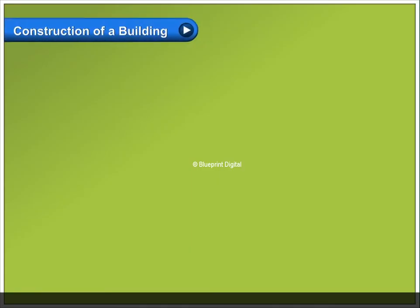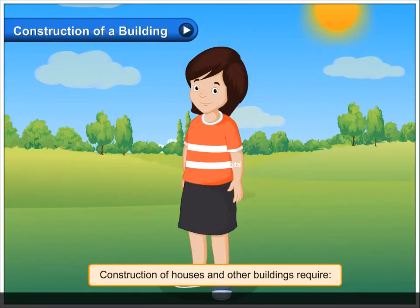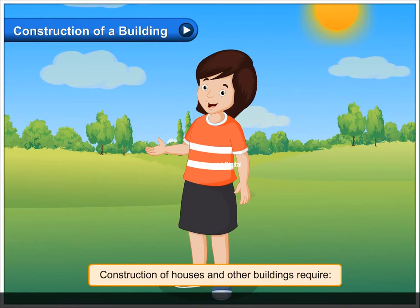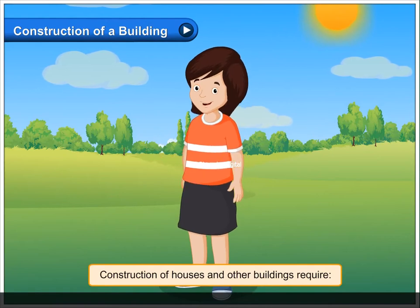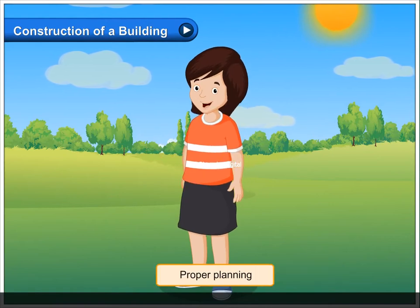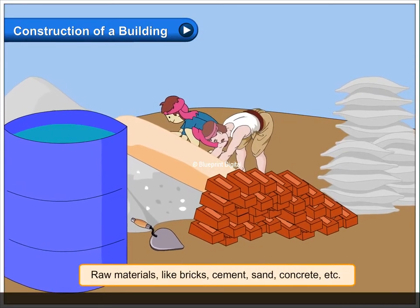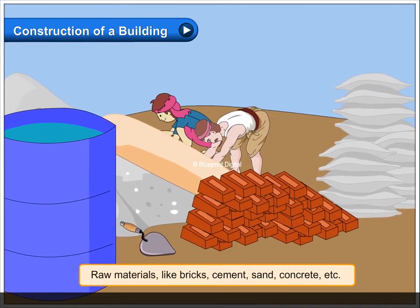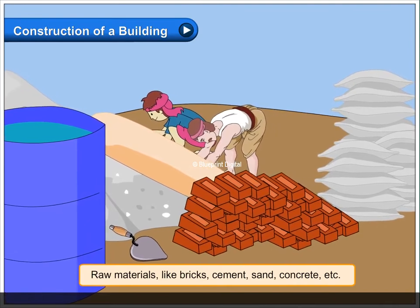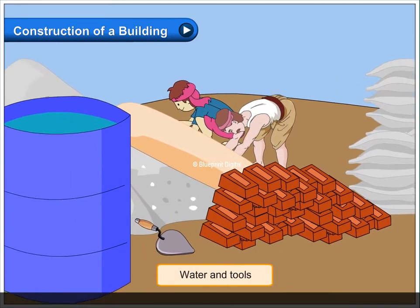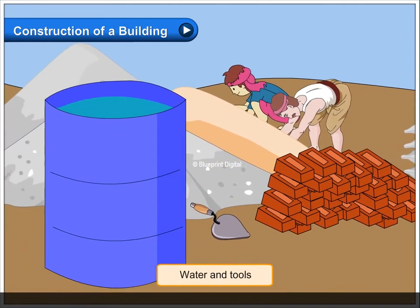Construction of a building requires proper planning. Raw materials like bricks, cement, sand, concrete, etc., water and tools are needed.